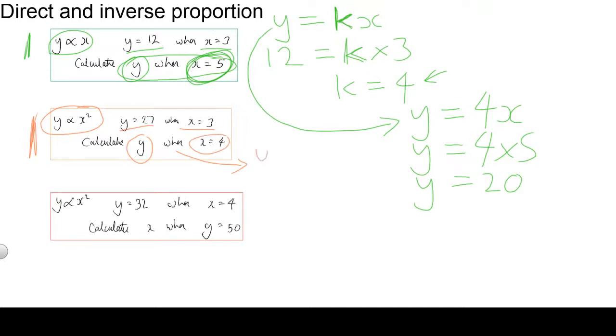So now we write this down, y is equal to k x squared. We need to find the value of k using the information that's given to us. So we have y is equal to 27, k is what I'm trying to find out, and x is equal to 3. So it's going to be times 3 squared. That's going to be 27 is equal to k times 3 squared is 9.